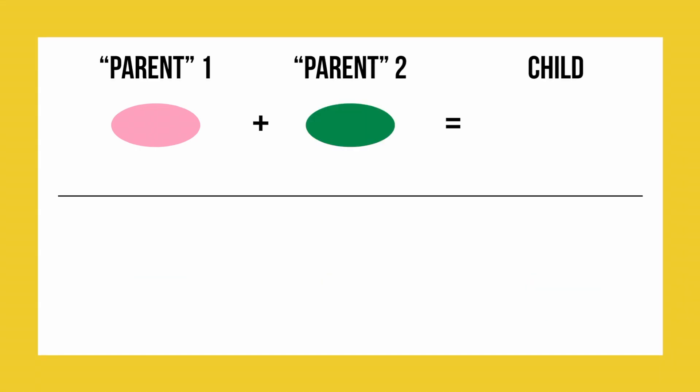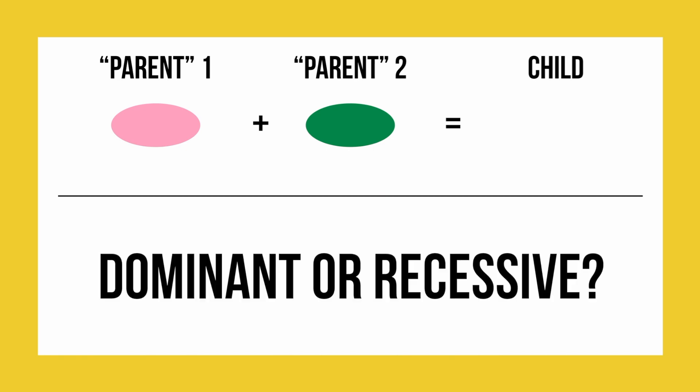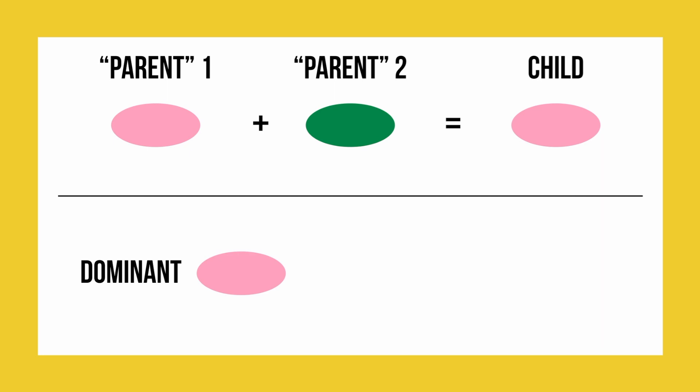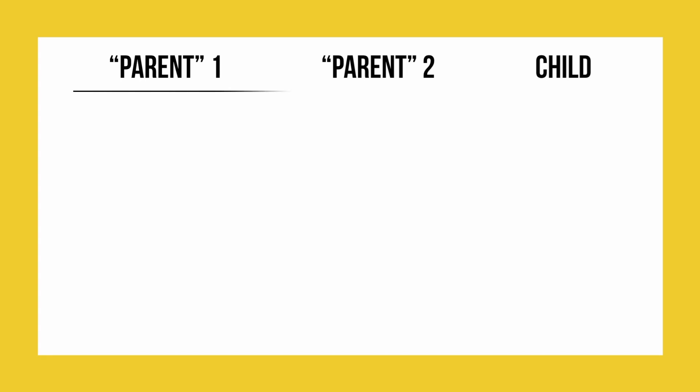But what happens if you pull one of each color? If this happens, you have to look at how dominant or recessive the different jellybeans or genes are. In our example, a pink parent 1 and a green parent 2 would result in a pink child. This means the pink gene is dominant, where the green gene is recessive. We can now use these rules to fill in the rest of our chart.